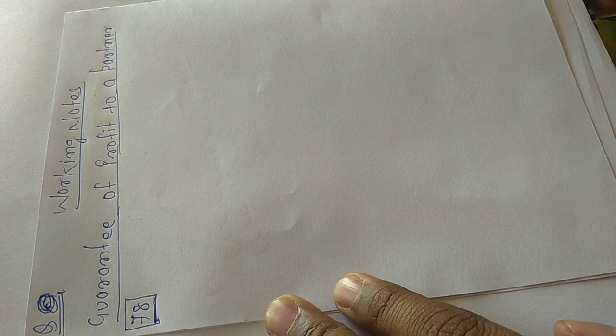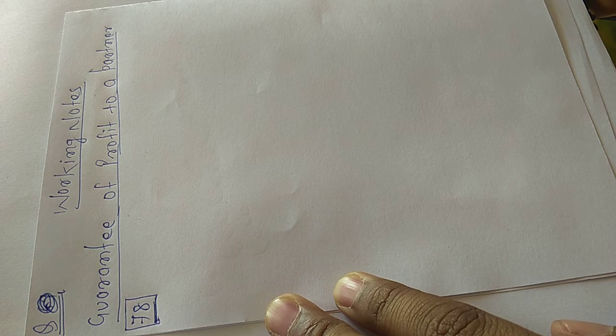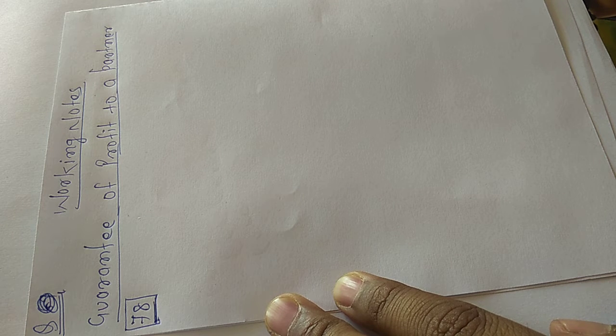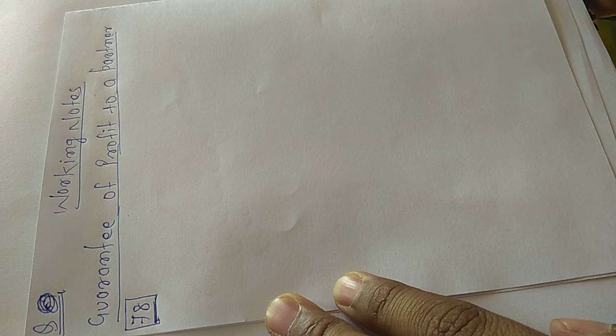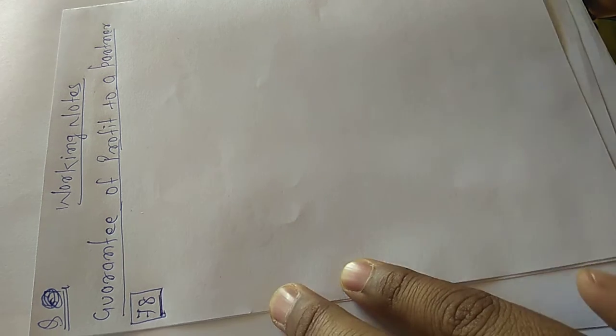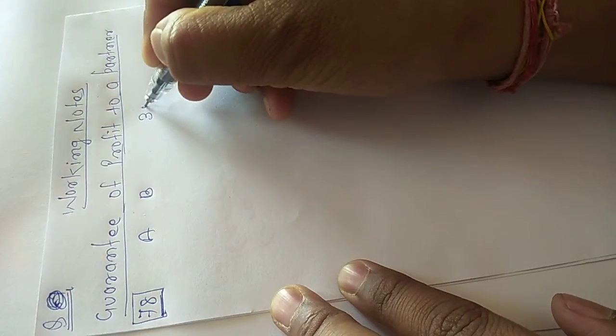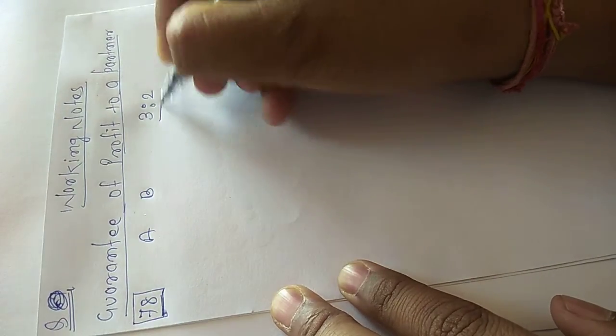So start, question number 78 says, A and B are partners sharing profit in the ratio of 3 to 2. So A and B are partners, their profit sharing ratio is 3 is to 2.